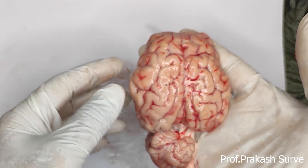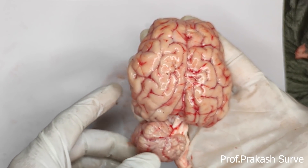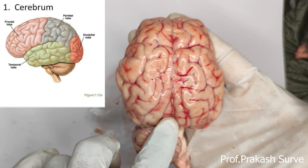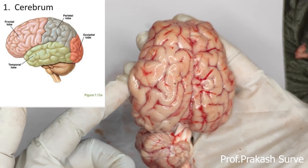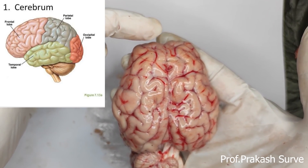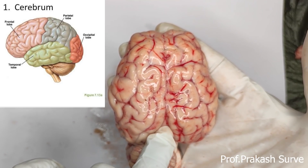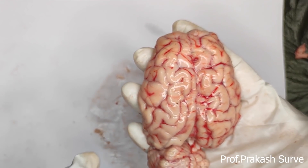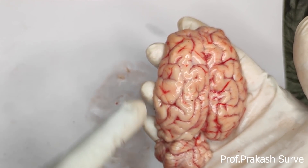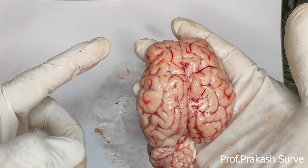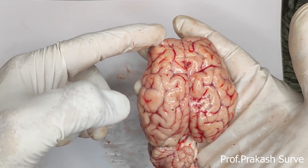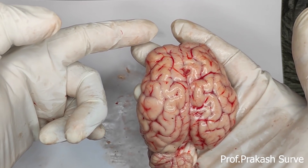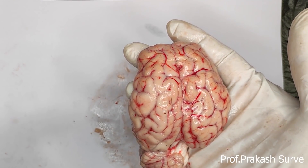The cerebrum has four lobes: the frontal lobe, the occipital lobe, the parietal lobe, and the temporal lobe. The function of the frontal lobe includes expression of emotions, intelligence, willpower, memory, personality, and control of voluntary movements.